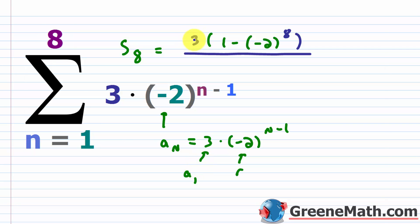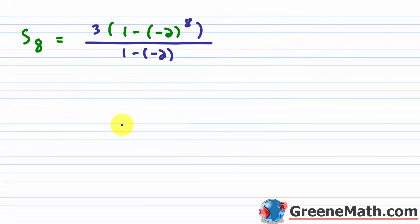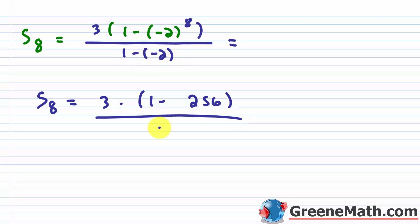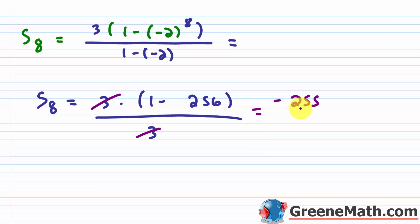Evaluating: negative 2 to the 8th power is 256. So we have 3 times 1 minus 256 over 1 minus negative 2. The denominator is 1 plus 2 equals 3. The 3 in the numerator and the 3 in the denominator cancel. So we get 1 minus 256, which is negative 255. The sum of the first 8 terms of that geometric sequence is negative 255.